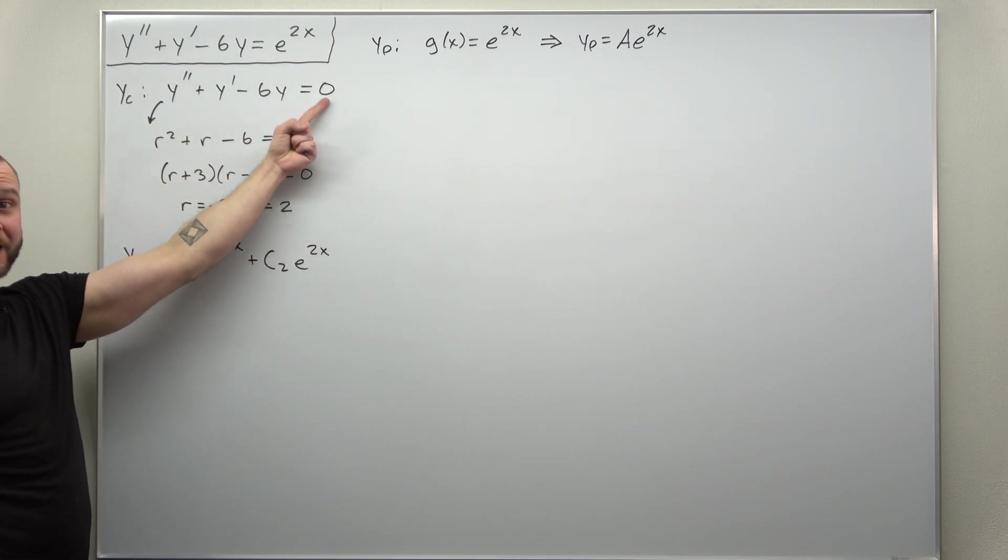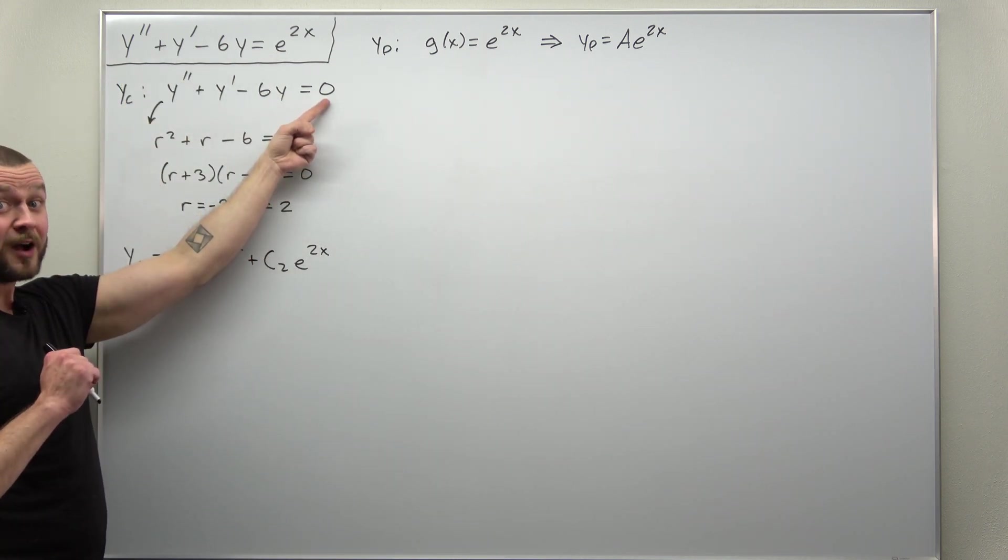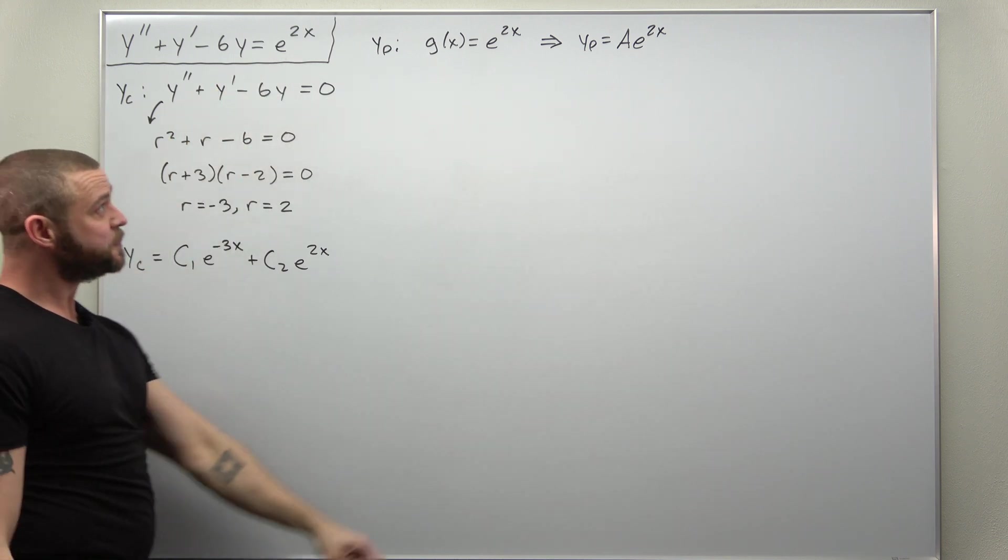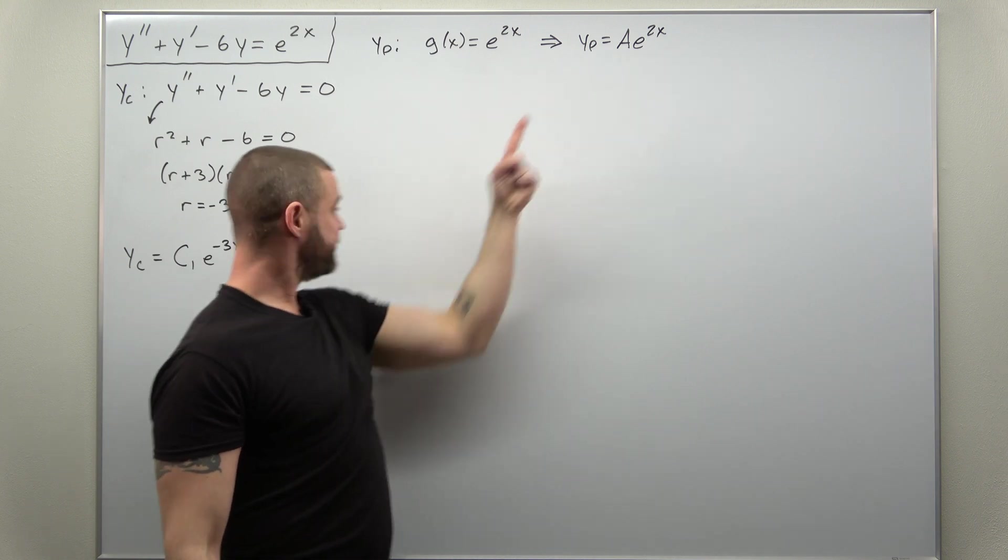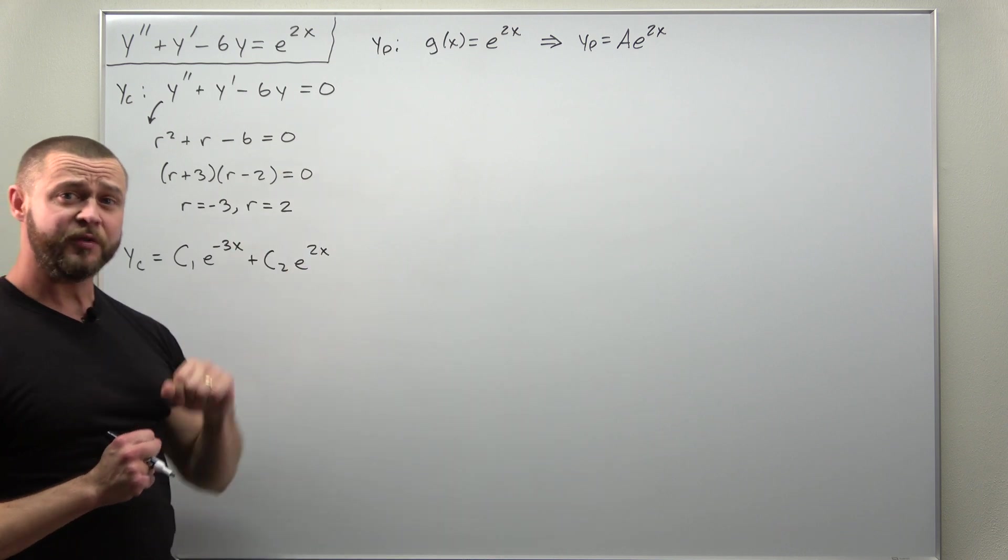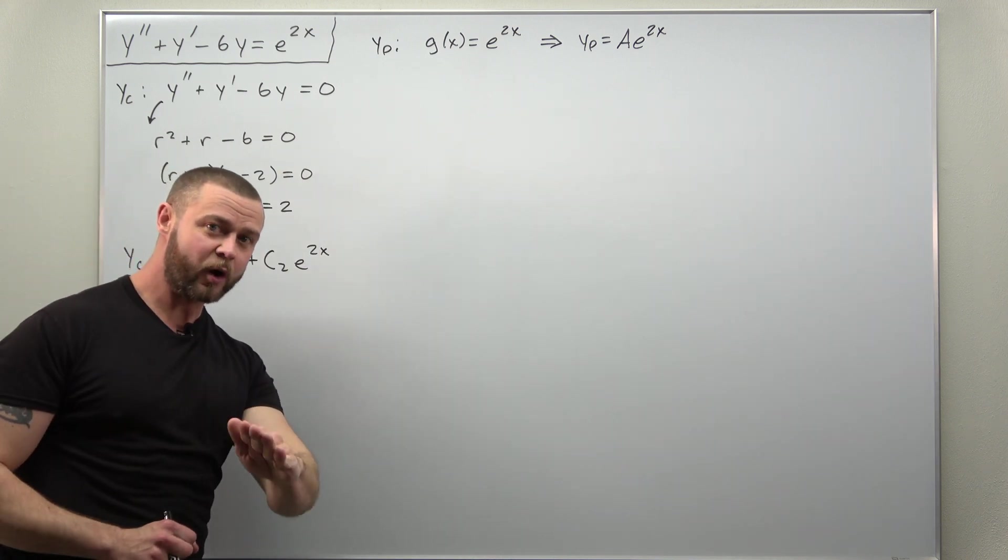you're going to get the right-hand side to come out to zero, not e^(2x). That is because this duplicates what we have in our complementary solution. So this choice doesn't work.